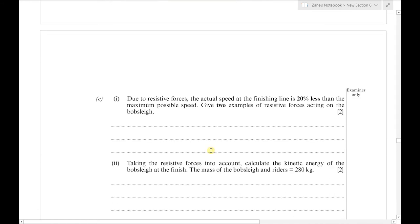Next part: due to resistive forces, the actual speed at the finishing line is 20% less than the maximum possible speed. We've got to give two examples of resistive forces. We could talk about air resistance and friction between the sleigh's runners and the snow.